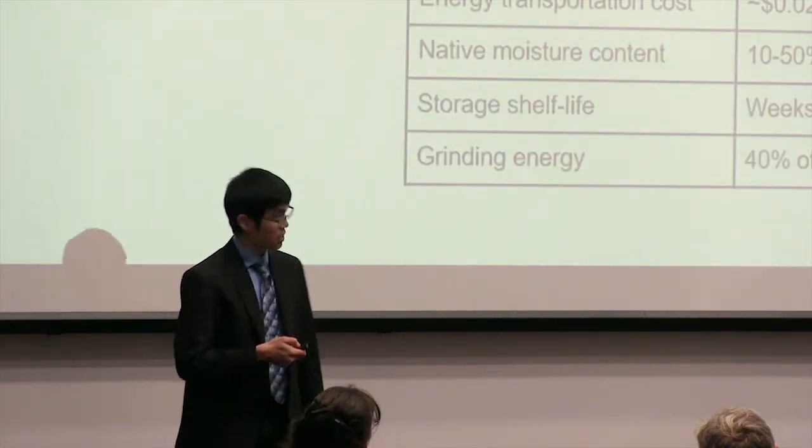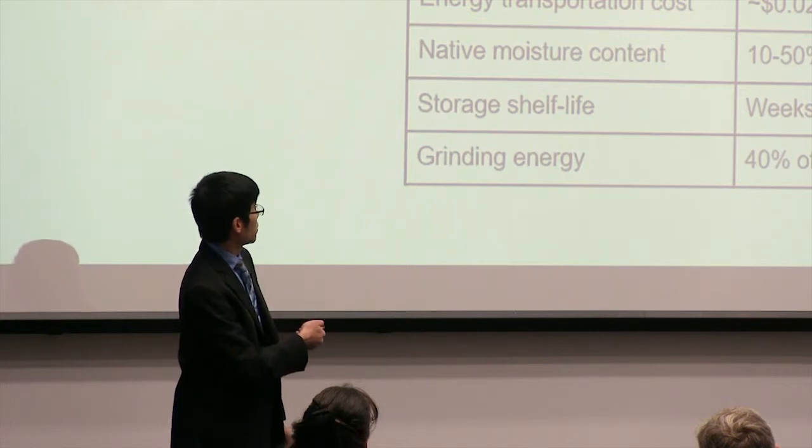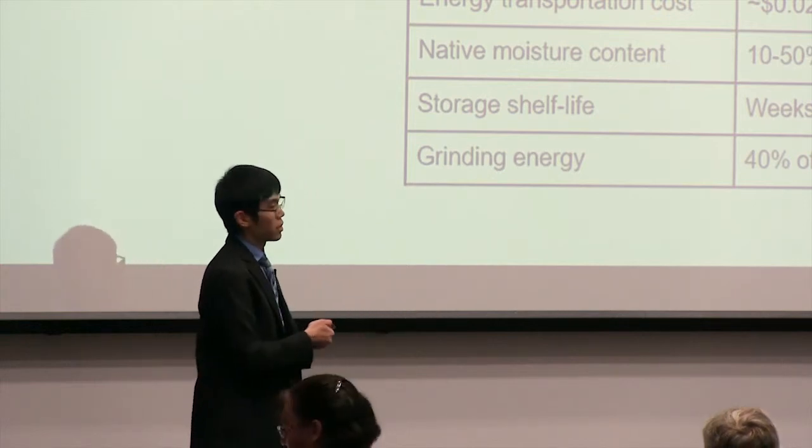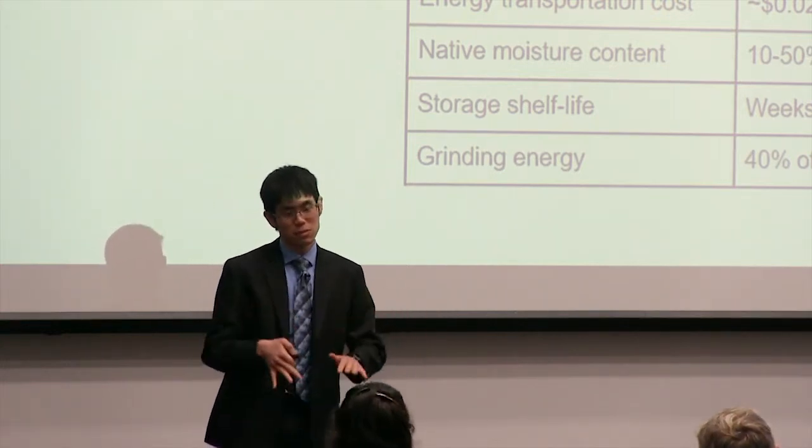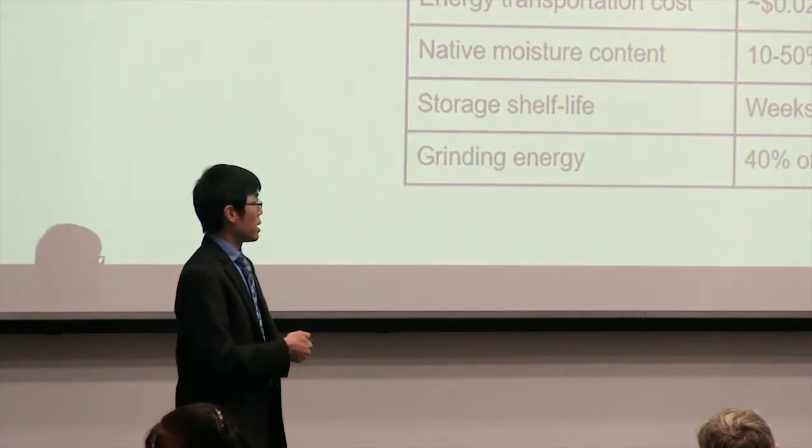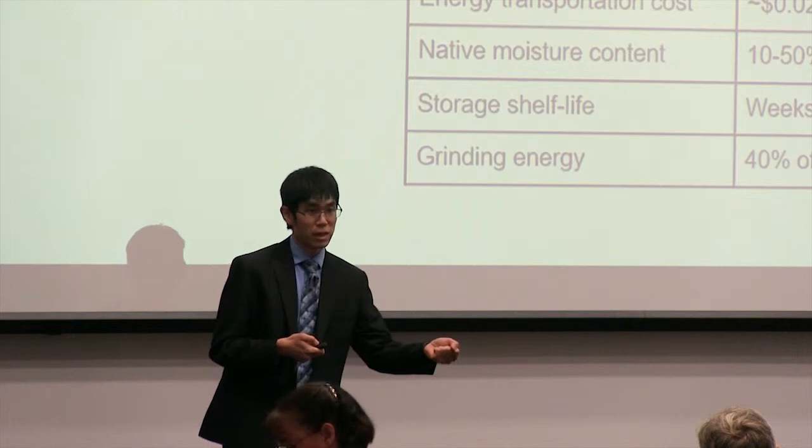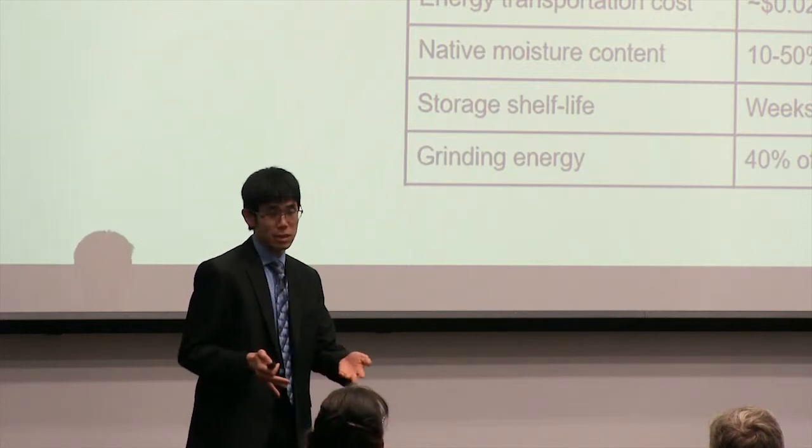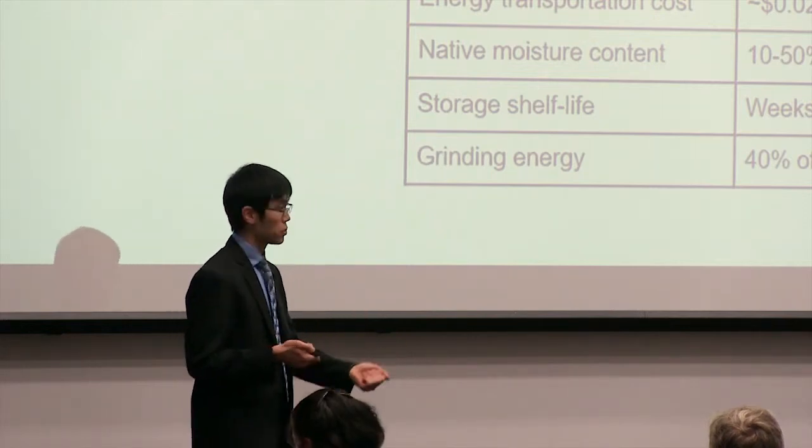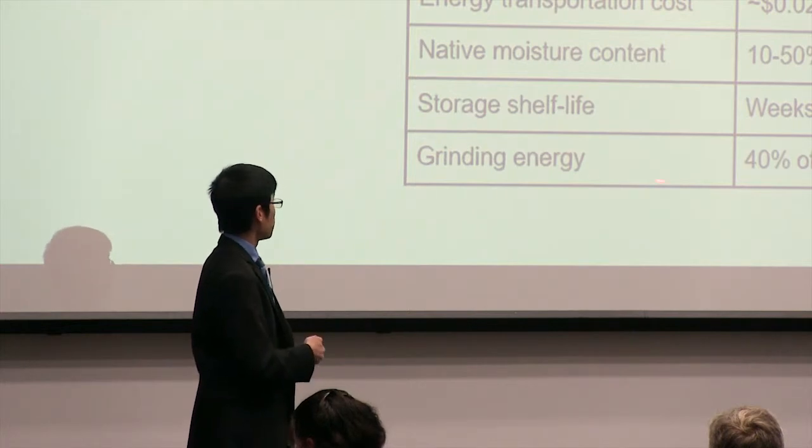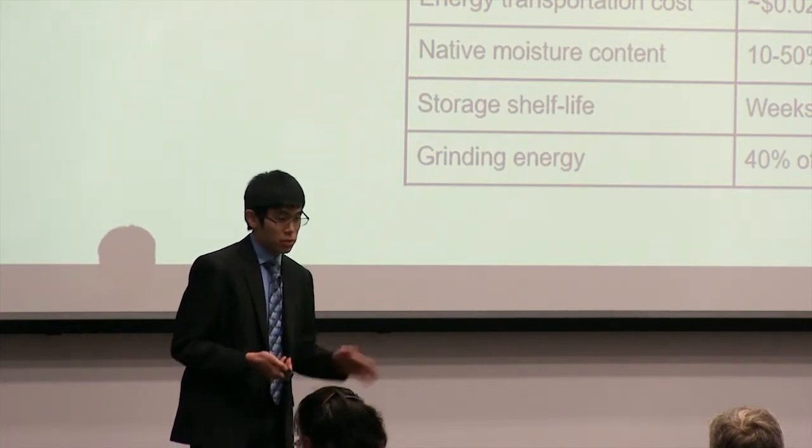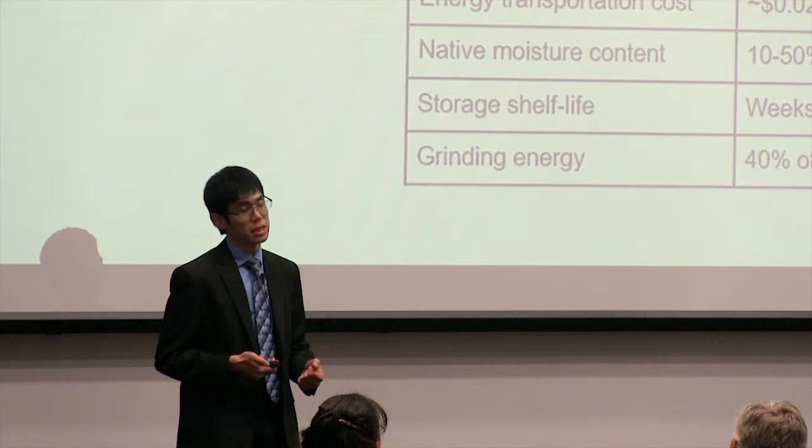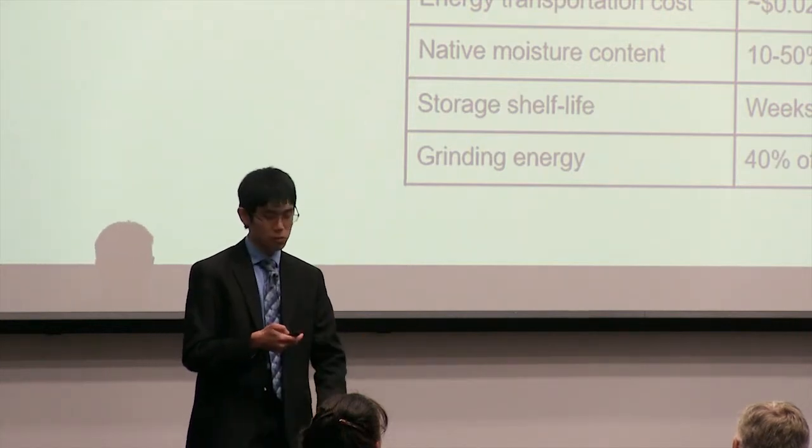The various benefits are captured in this table here. In terms of density, we can raise about five times. That means for the same truckloads, you can load a lot more energy output, and therefore, reduce transportation costs. Furthermore, torrefaction actually renders biomass hydrophobic, meaning that it's resistant against moisture attack, and therefore, greatly extends shelf life, addressing some of the reliability issues of using this sort of energy. And finally, more importantly, this process also increases the grindability of the biomass, making it much less energy-intensive to process for a form that can go into the boiler.